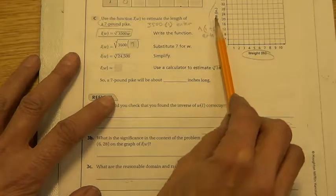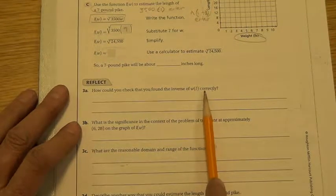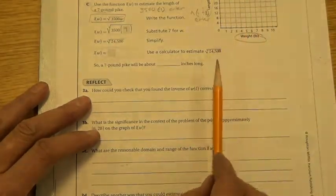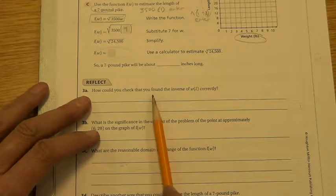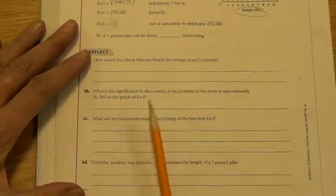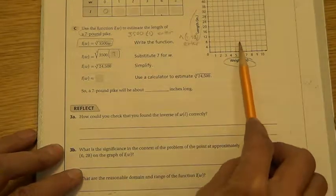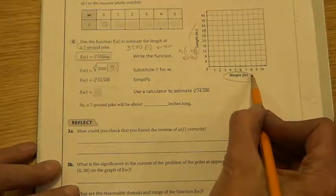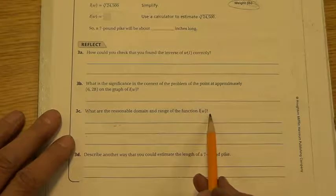Then they want you to use the function and plug in seven for a seven-pound pike. So this is the weight, seven. Seven times 3500 is 24,500. Now you take the cube root of that, and you'll have your estimated length. With the estimated length, it is about so many inches long. So you're taking weights, you're plugging them in, and you're coming out with a graph that will show you an estimated length in inches. How could you check that you found the inverse of w of l correctly? Well, there's a couple different ways. You could graph the l of w and see if it's an inverse across that y equals x line. You could look at your points and plug them into the other equation and see if they end up being input-output switch.